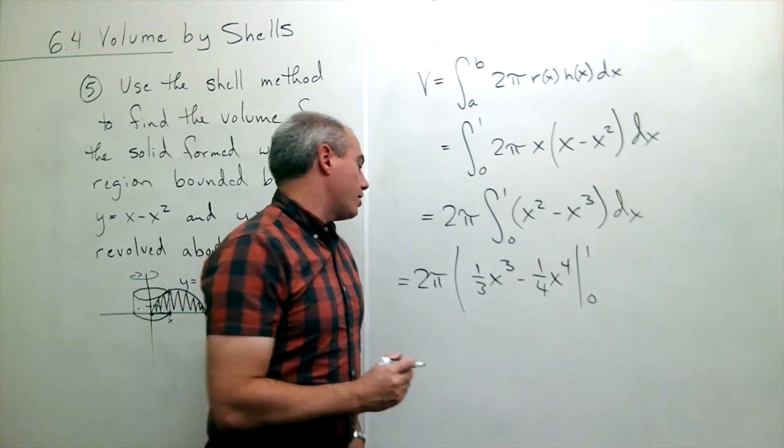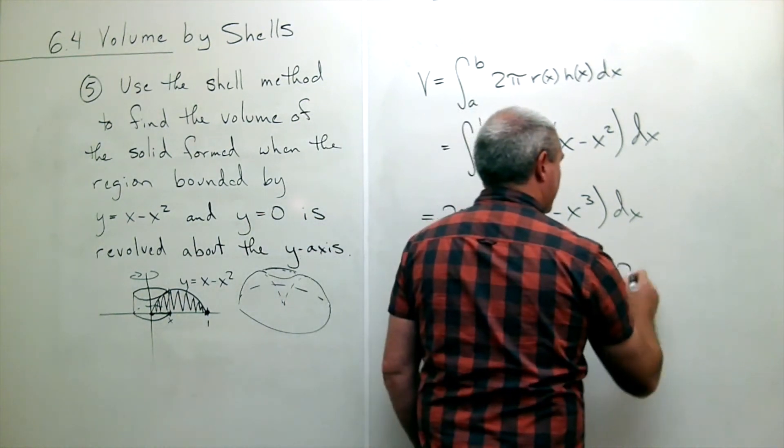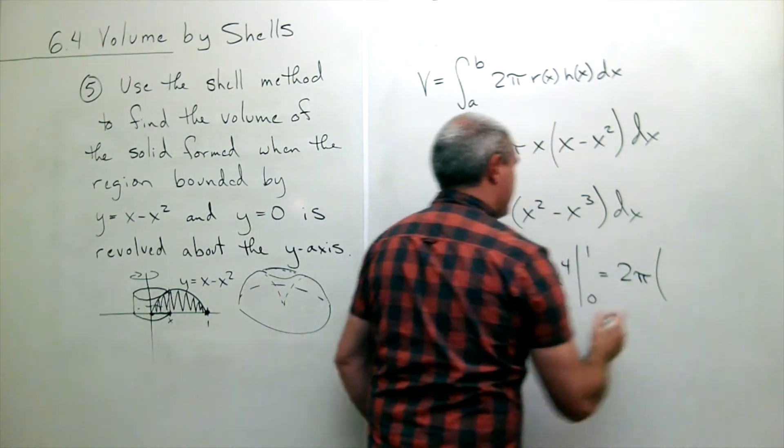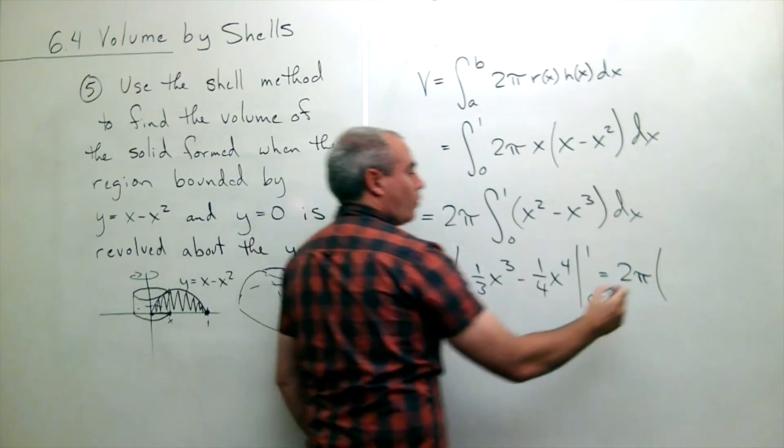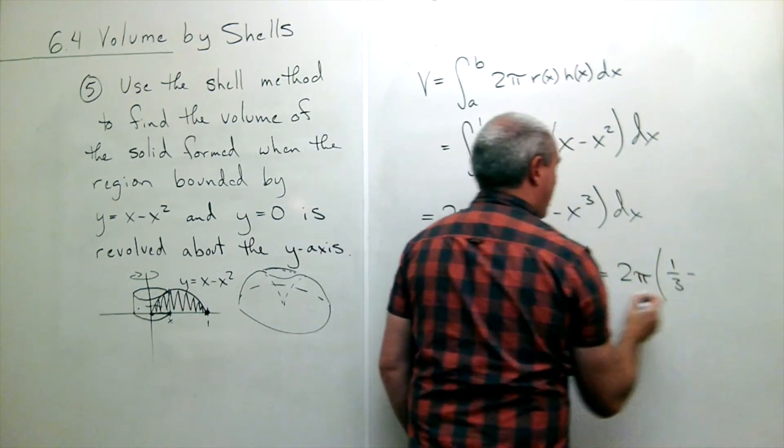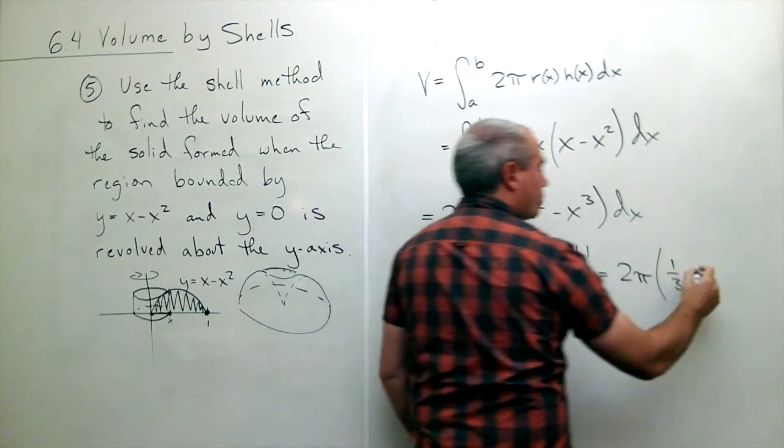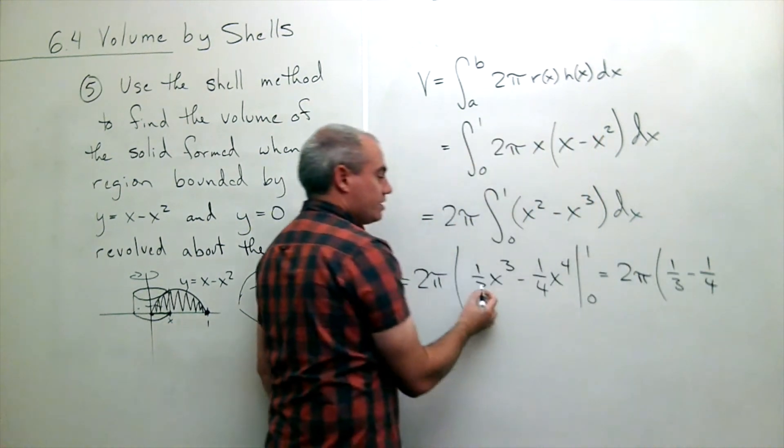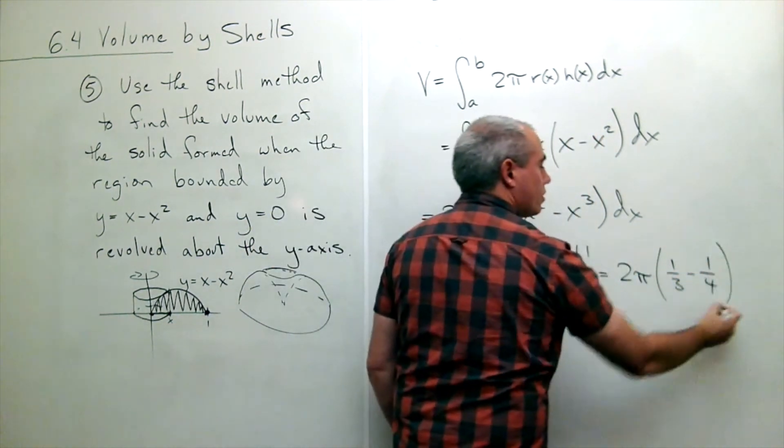Now I plug in the 1 and the 0 and I get 2 pi times 1 third minus 1 fourth. And then if I plugged in 0, I just get 0's. So we're done.